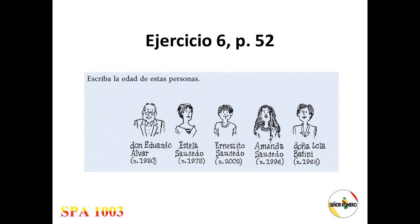Ejercicio 6, página cincuenta y dos. Escriba la edad de estas personas. But now you do not have the actual age — you only have the year of birth, so you have to do your math. Don Eduardo Alvar, nace en mil novecientos treinta. Estela Saucedo, nace en mil novecientos setenta y cinco. Ernestito Saucedo, nace en mil novecientos noventa y seis. Doña Lola Batini, nace en mil novecientos sesenta y ocho.